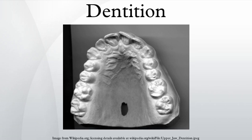Dentition pertains to the development of teeth and their arrangement in the mouth. In particular, it is the characteristic arrangement, kind, and number of teeth in a given species at a given age. That is, the number, type, and morphophysiology of the teeth of an animal.